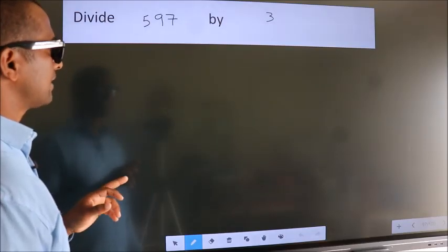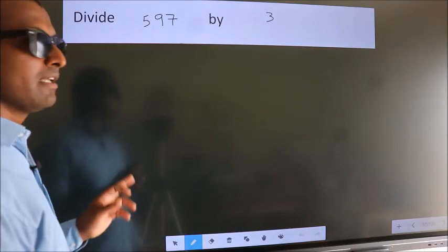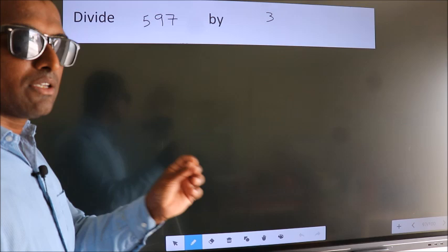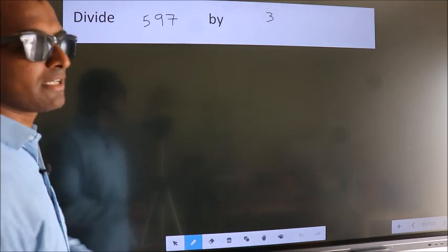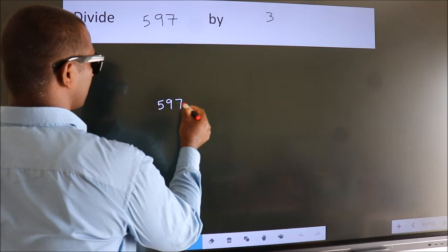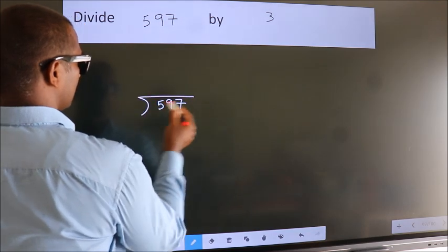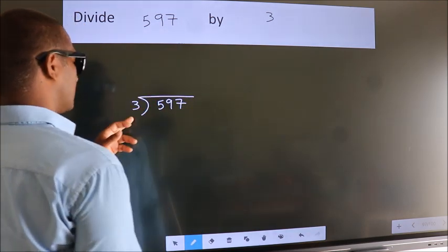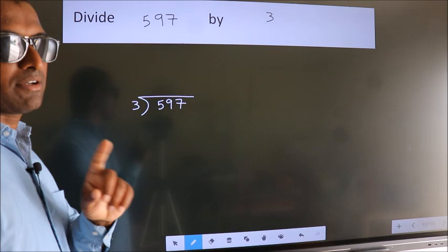Divide 597 by 3. To do this division, we should frame it in this way. 597 here, 3 here. This is your step 1.